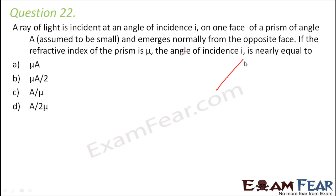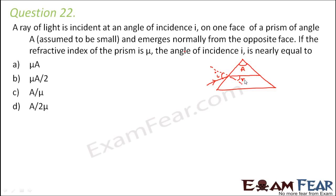Let's draw the diagram of a prism. This is the prism and this is the angle of prism. A ray of light is incident on one face of the prism — this is the normal, so this is the angle of incidence. As it enters the prism the ray bends; this is the angle of refraction. Then it emerges out normally from the opposite face.